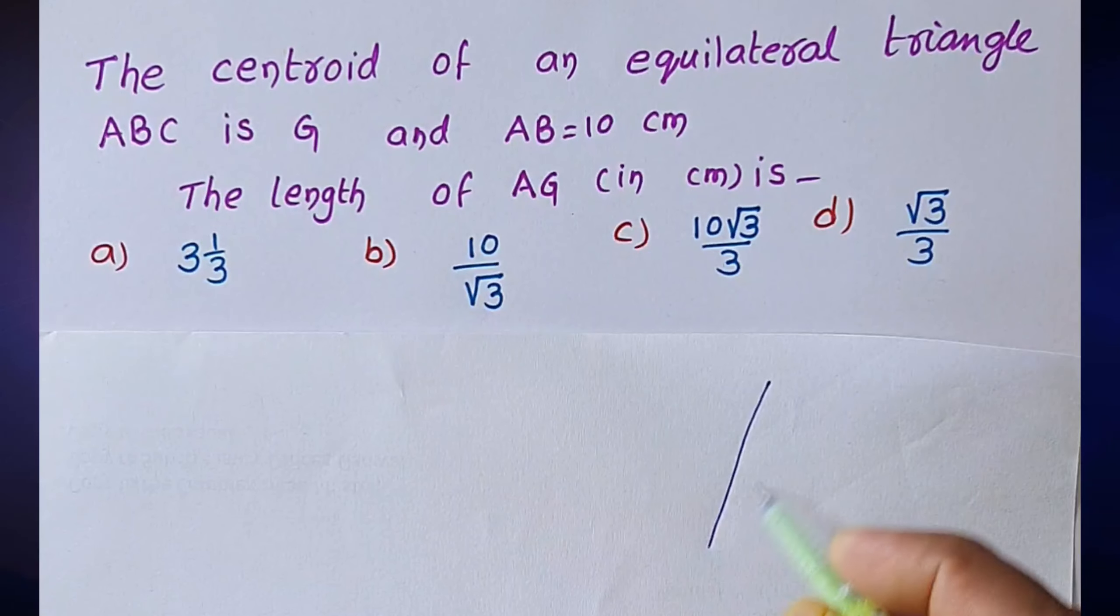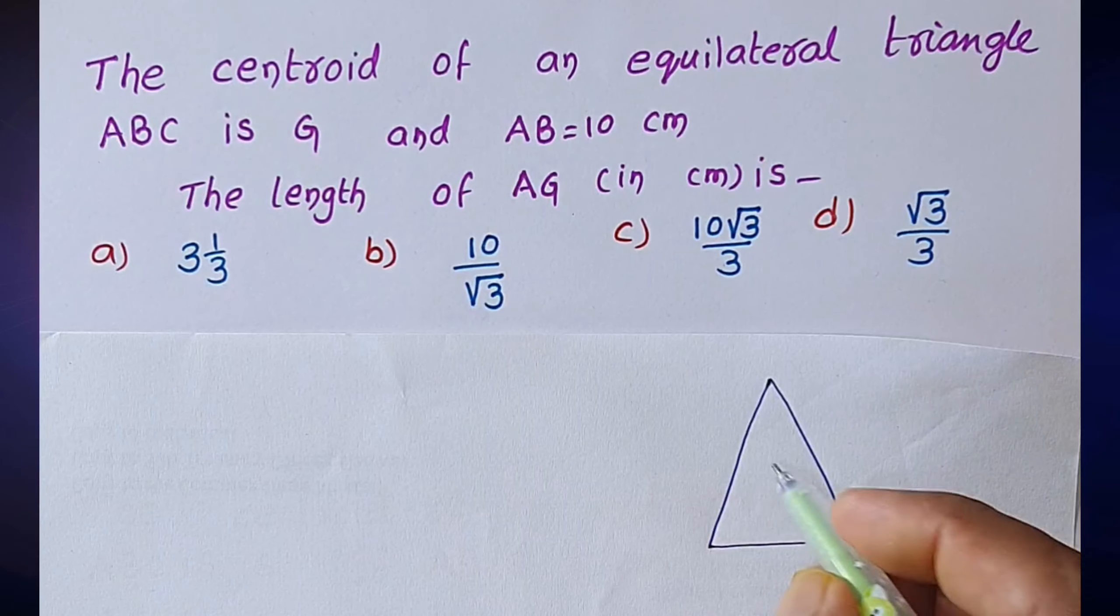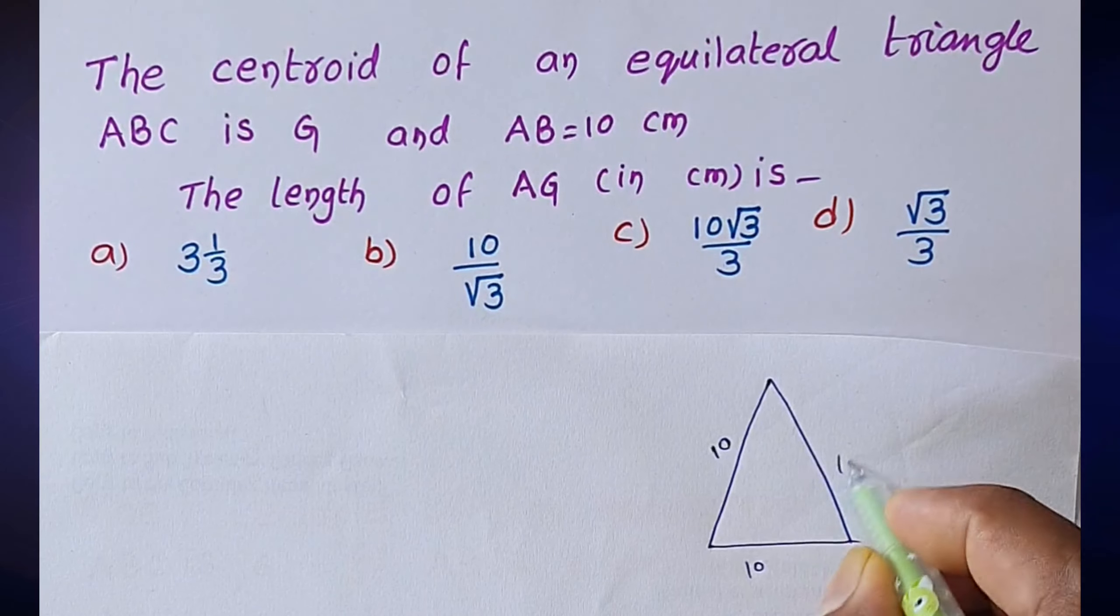Given data: ABC is an equilateral triangle. AB is equal to 10 centimeters, means all sides are equal.